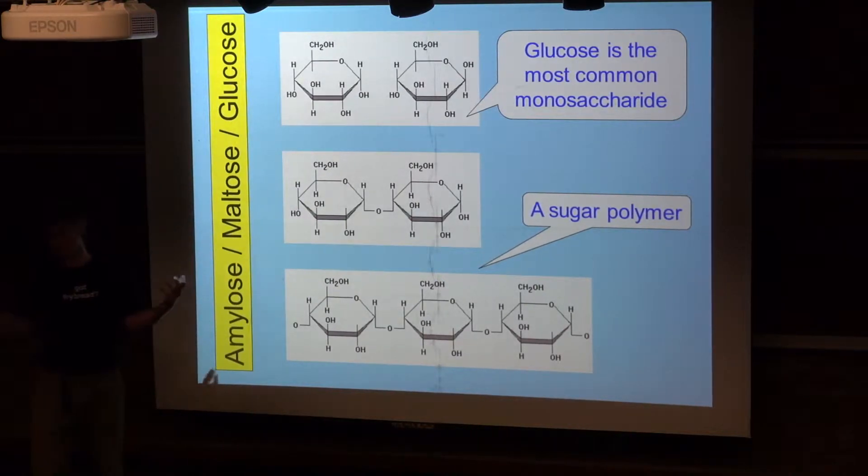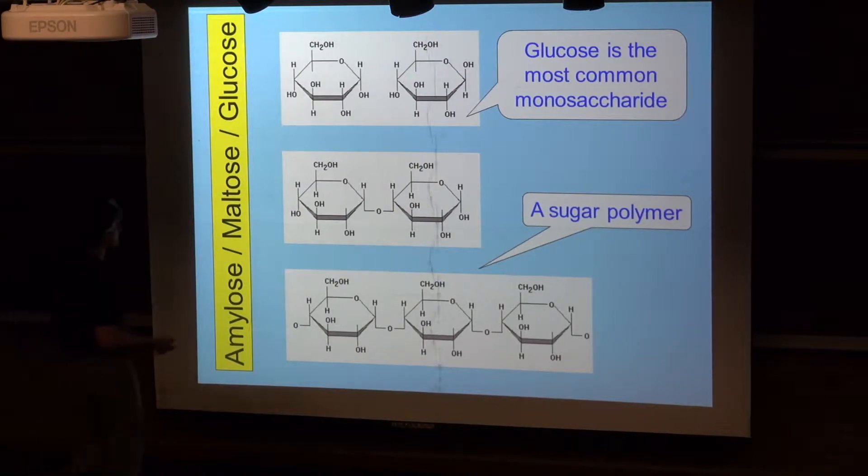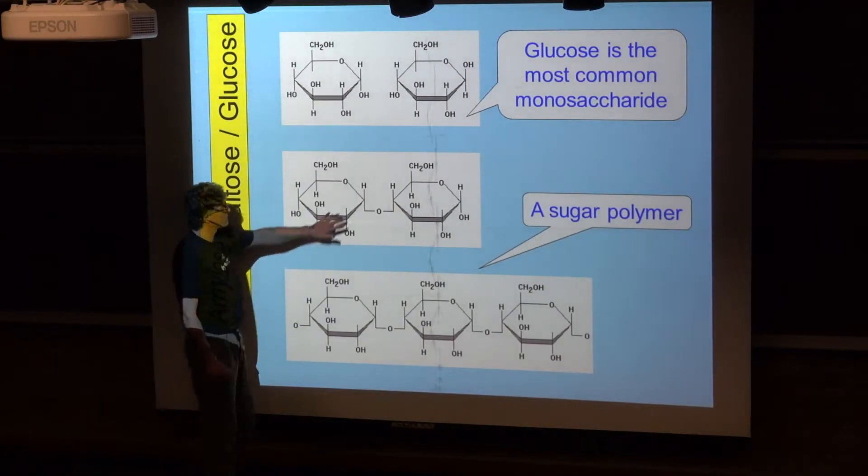You've got a glycosidic linkage, a 1,4 glycosidic linkage. It's actually an alpha 1,4 glycosidic linkage. And that's called maltose.